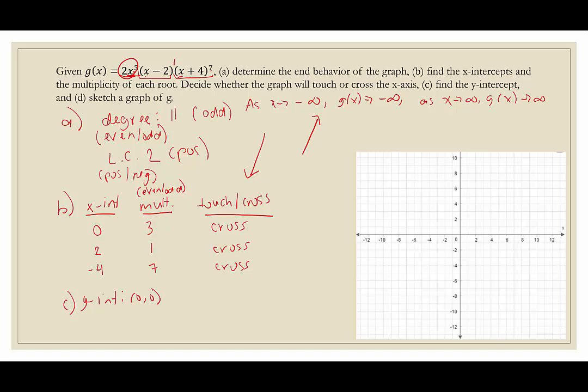We're going to sketch a very rough graph — not close to accurate, but capturing the general ideas. We start by graphing the three x-intercepts: (0, 0), (2, 0), and (−4, 0). If you're uncomfortable, you can always plug in other values like negative 5, negative 2, or 1 to check whether the graph is above or below the x-axis. But we'll trust that we did parts A, B, and C correctly.